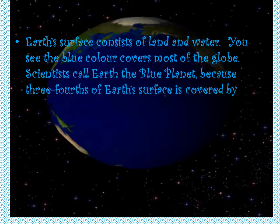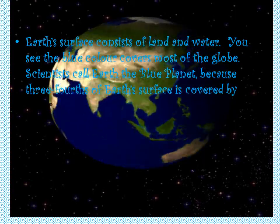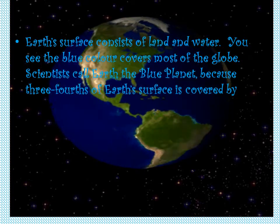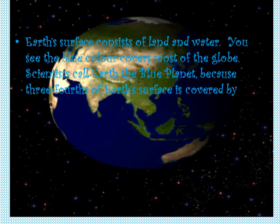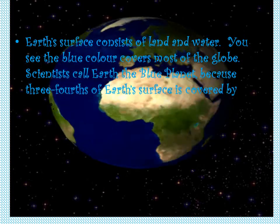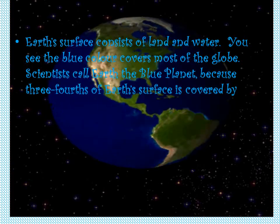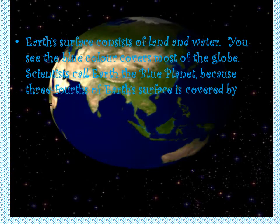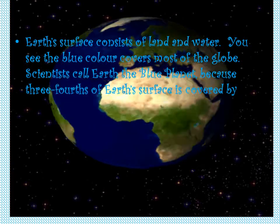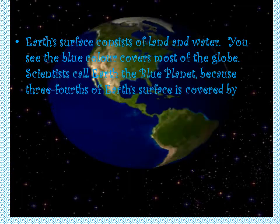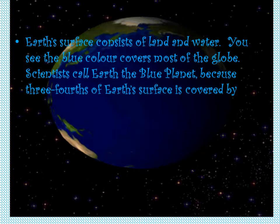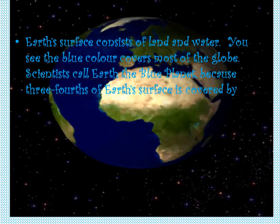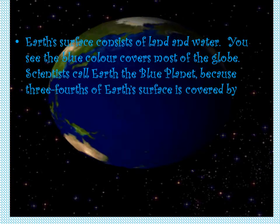Earth's surface consists of land and water. You can see the blue colour covers most of the globe. Scientists call Earth the Blue Planet because three-fourths of Earth's surface is covered by water.